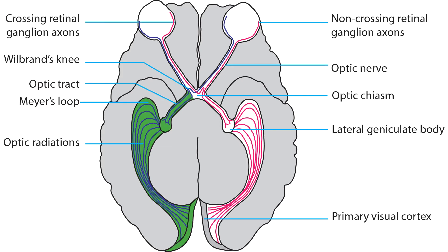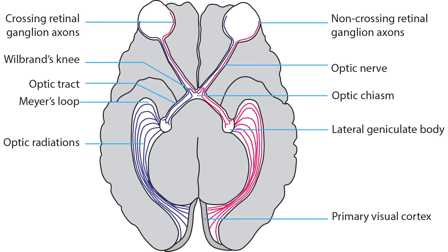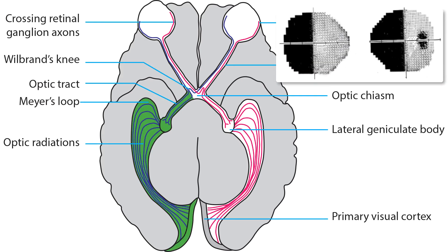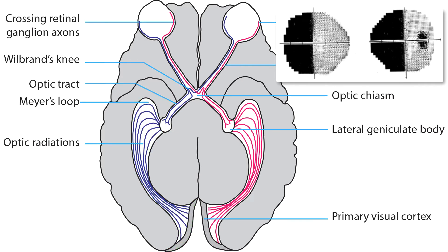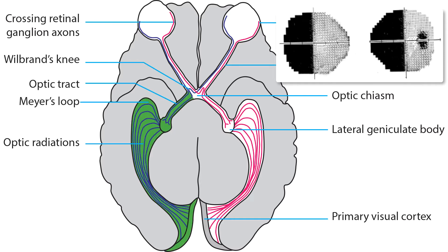Damage to the visual pathway anywhere in this retrochiasmal portion will cause hemianopic defects in both eyes, and they will be homonymous — that is, on the same side of visual space in both eyes.